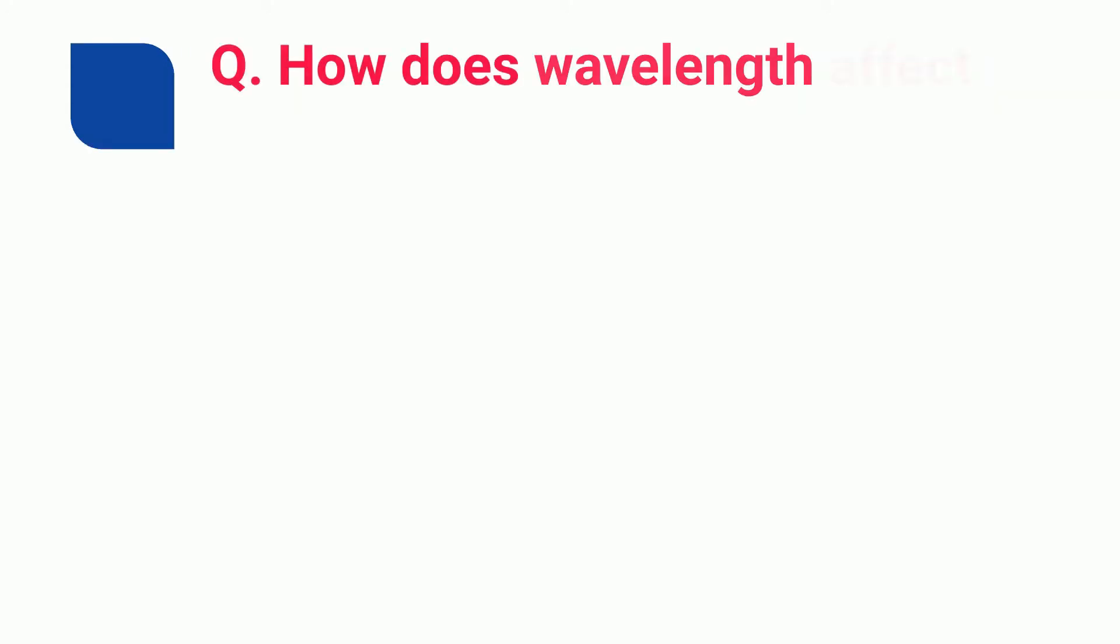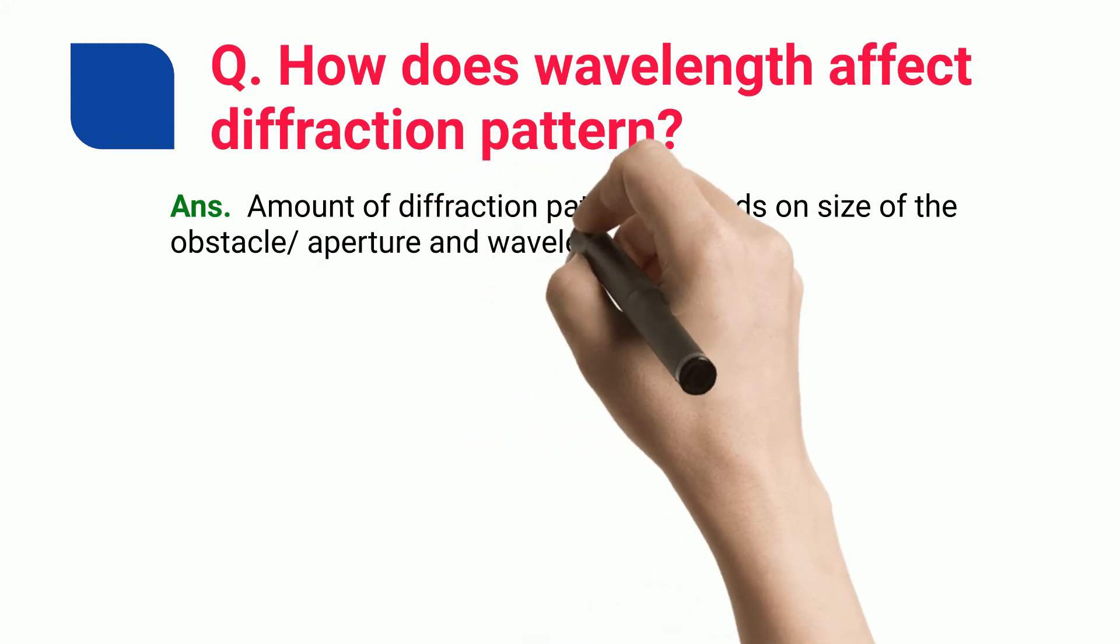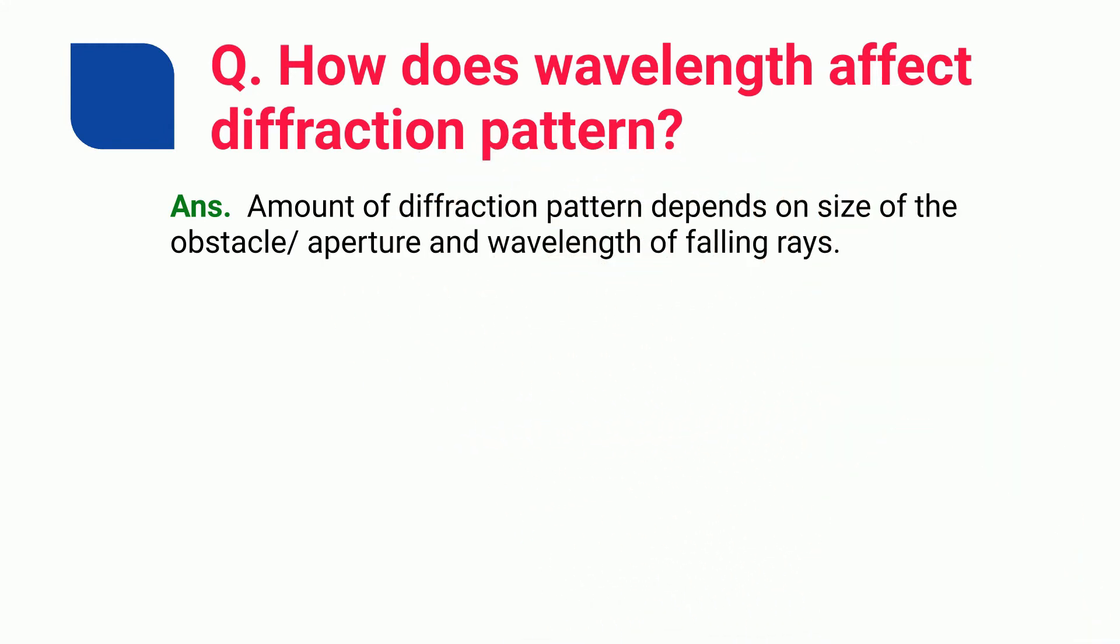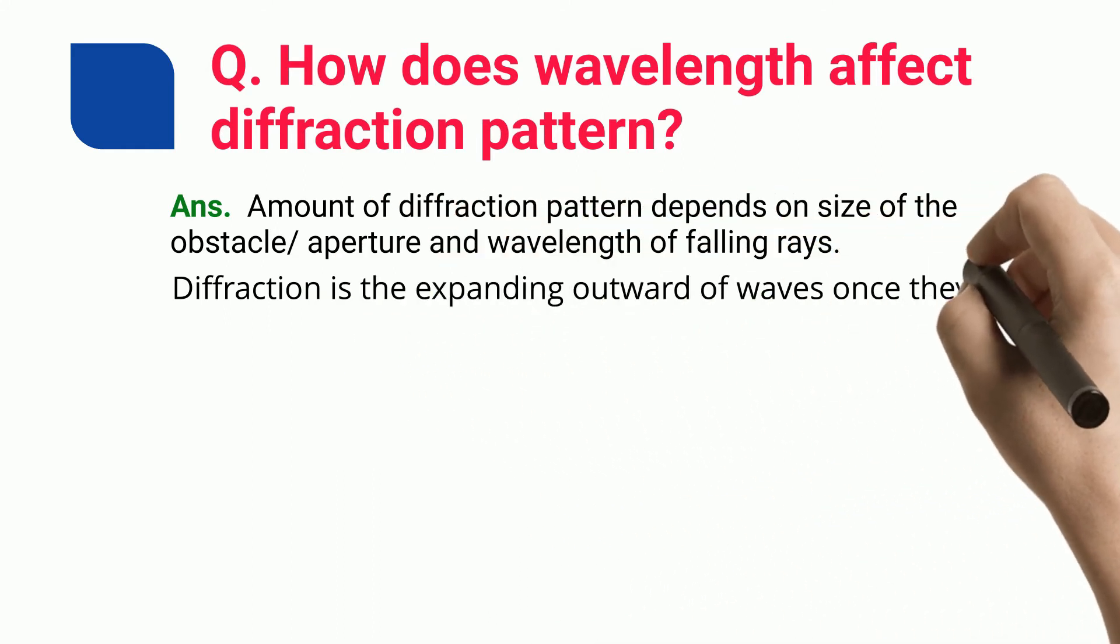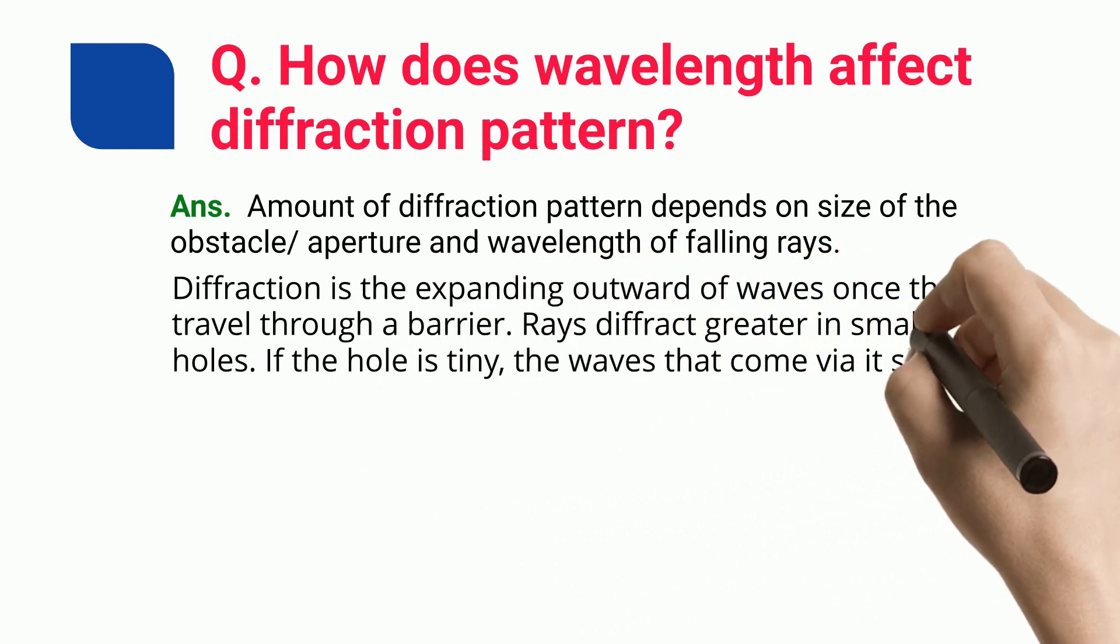How does wavelength affect diffraction pattern? The amount of diffraction pattern depends on the size of the obstacle or aperture and wavelength of falling rays. Diffraction is the expanding outward of waves once they travel through a barrier. Rays diffract greater in smaller holes.